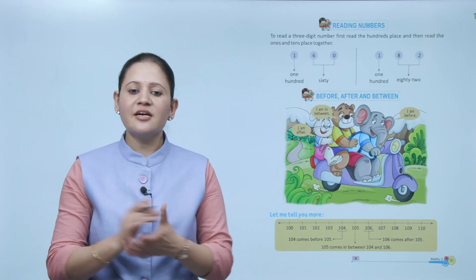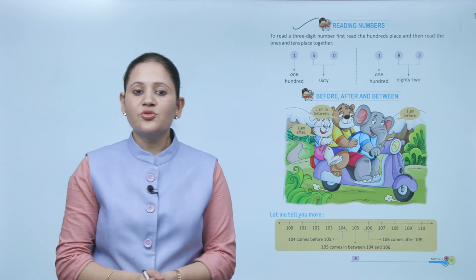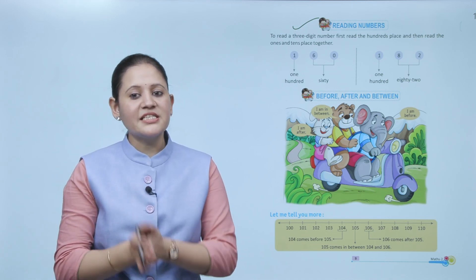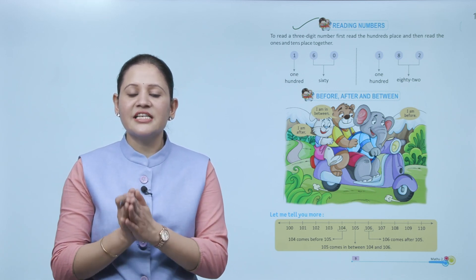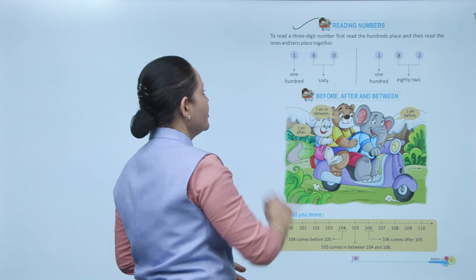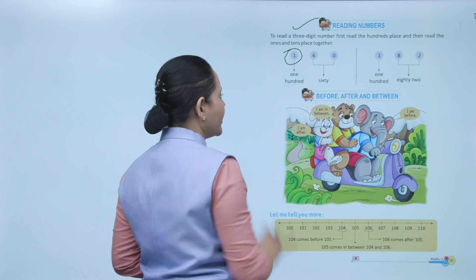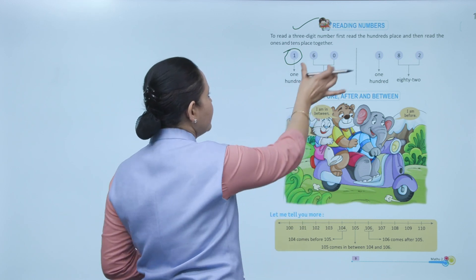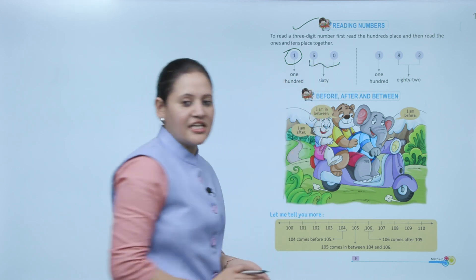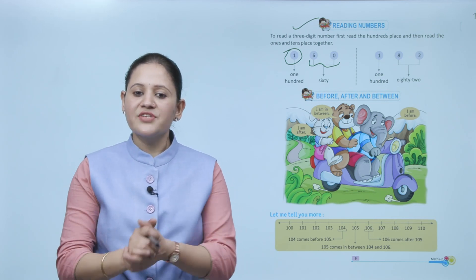Next: reading numbers. To read a three-digit number, first read the hundreds place and then read the tens and ones place together. For example, for a three-digit number, first we read the hundreds number, that is 100, giving us one hundred sixty. Like this, we will read the number. Next: before, after, and between.